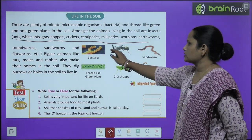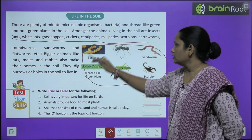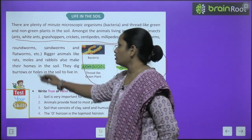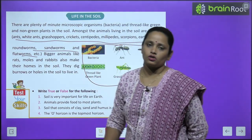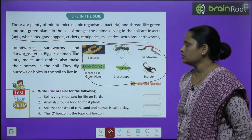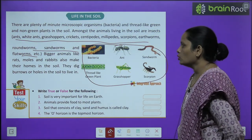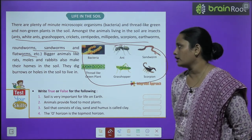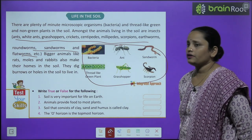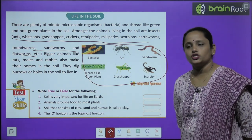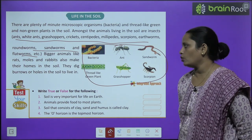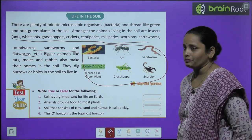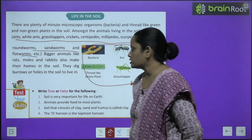Here you can see the picture of all things that live in soil. Some more are there: roundworm, sandworm and flatworm — these worms are also found in soil. Bigger animals like rat, moles and rabbit also make their home in the soil — they dig burrows or holes in soil to live in.